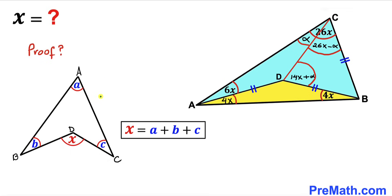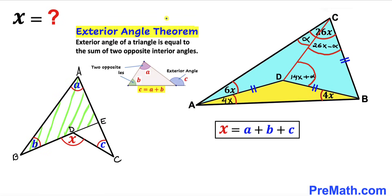Let me show you a quick proof of that fact. Extend line BD to a new point E, creating triangle ABE. Recall the exterior angle theorem: the exterior angle of a triangle equals the sum of the two opposite interior angles. In triangle ABE, the exterior angle C equals the sum of the two opposite interior angles A plus B.